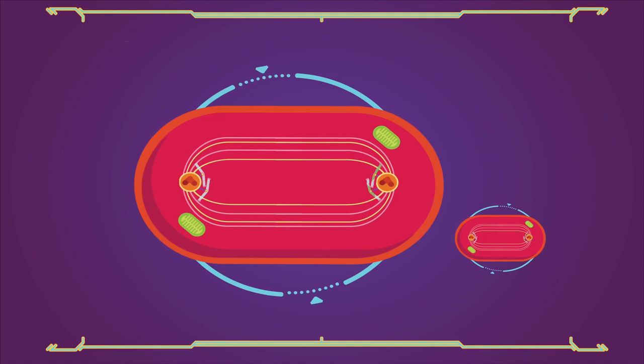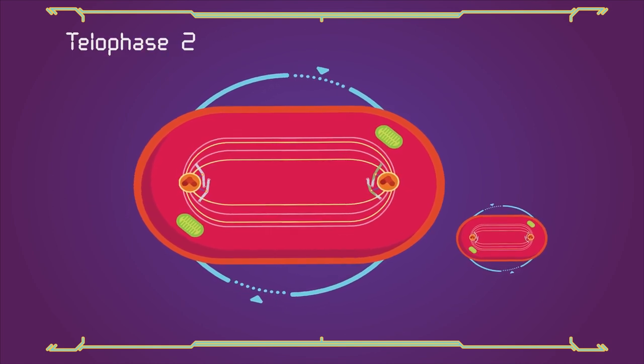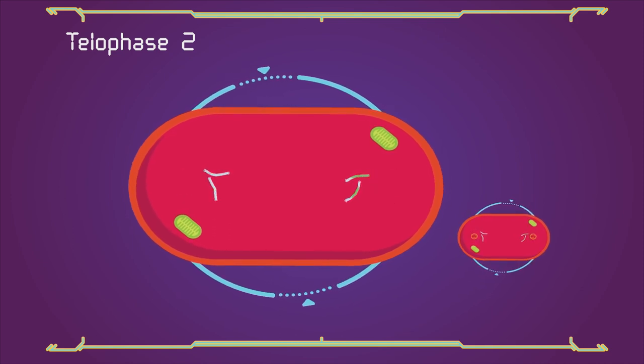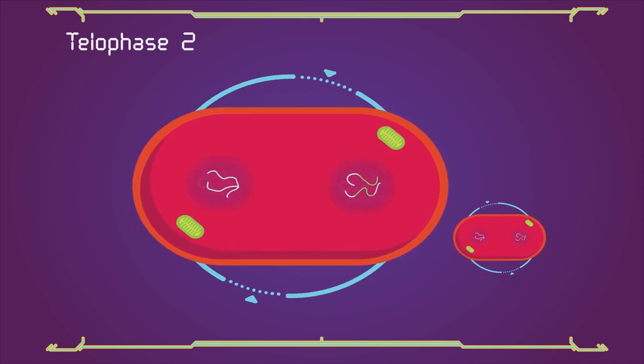The process ends with telophase 2, which is similar to telophase 1, and is marked by the disassembly of the spindle and decondensation and lengthening of the chromosomes.